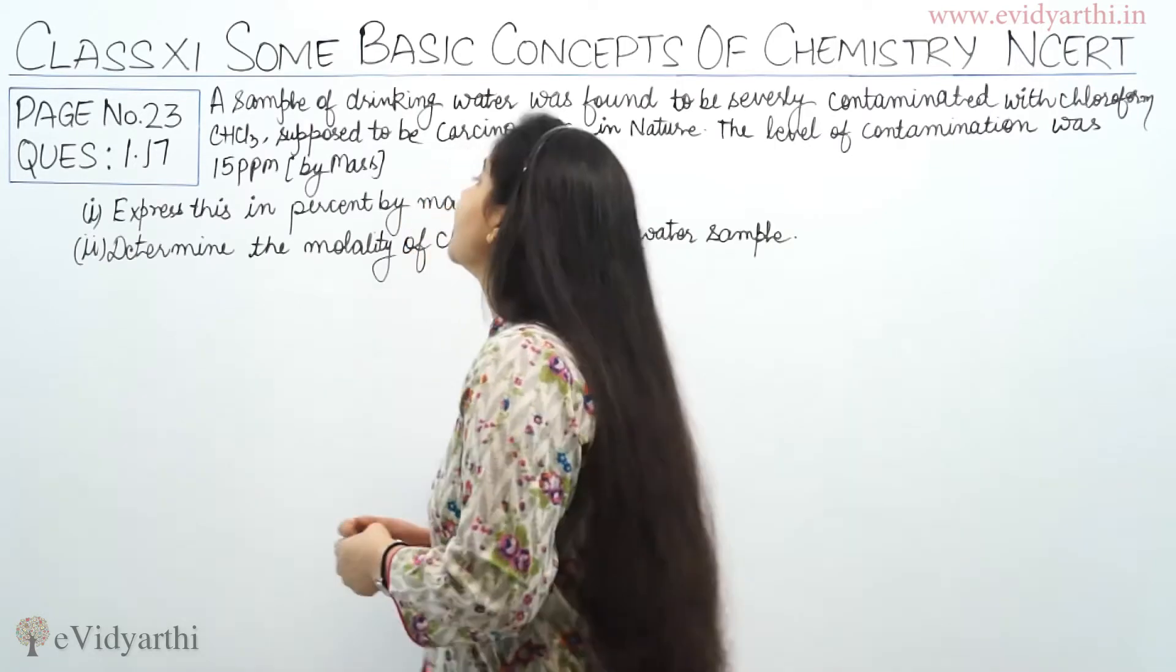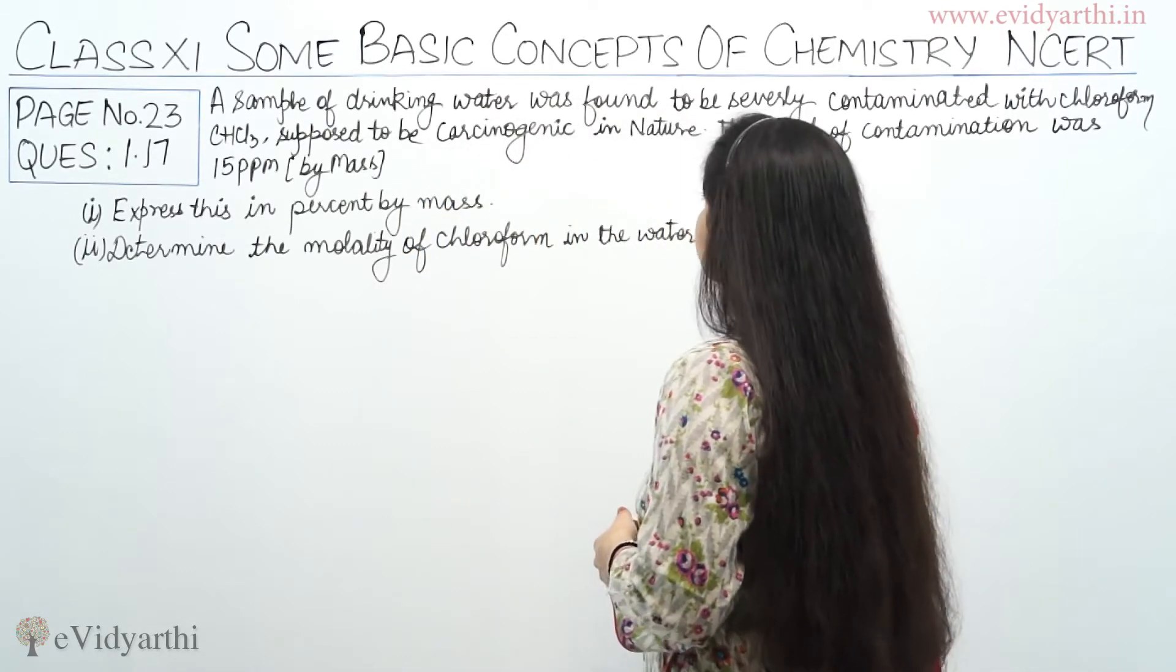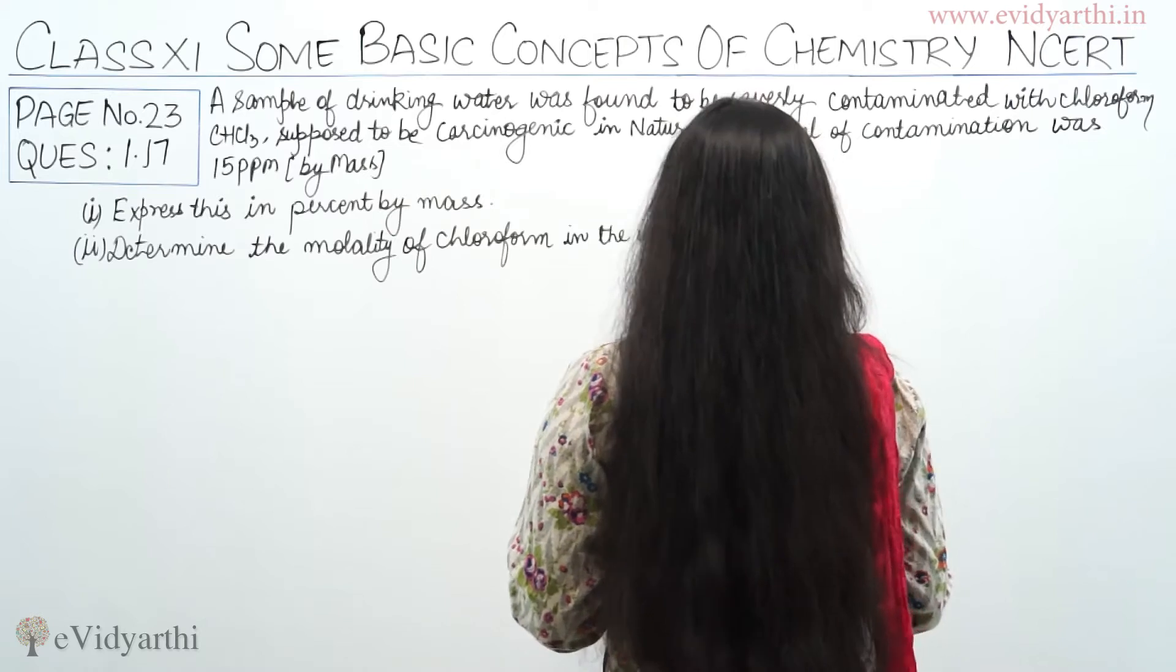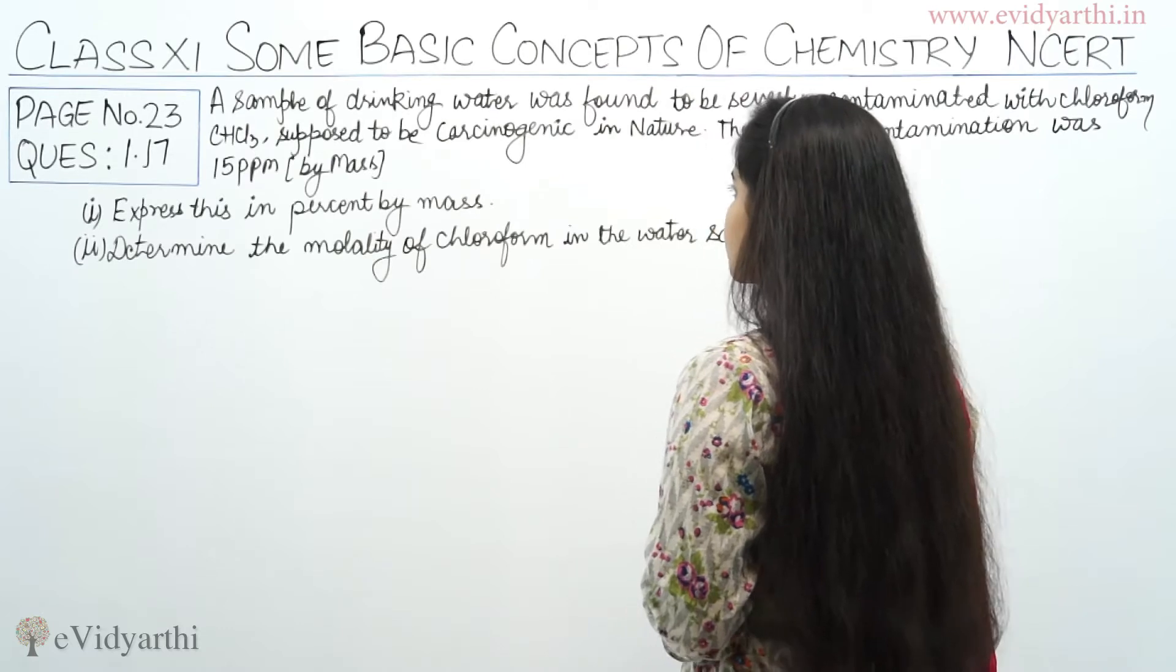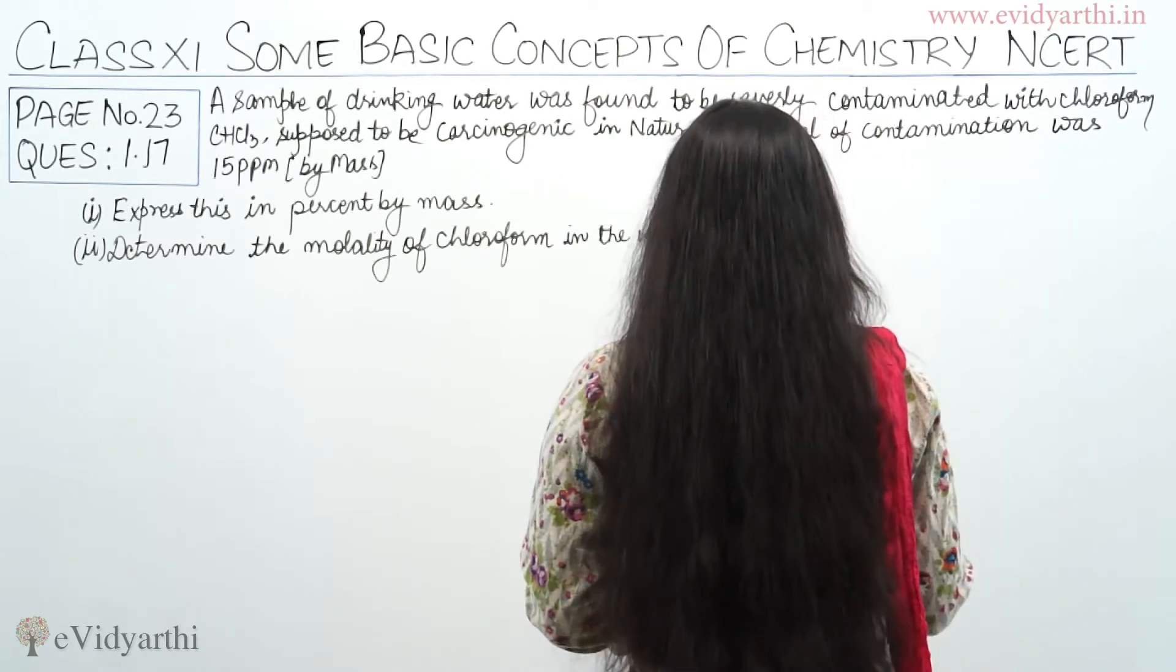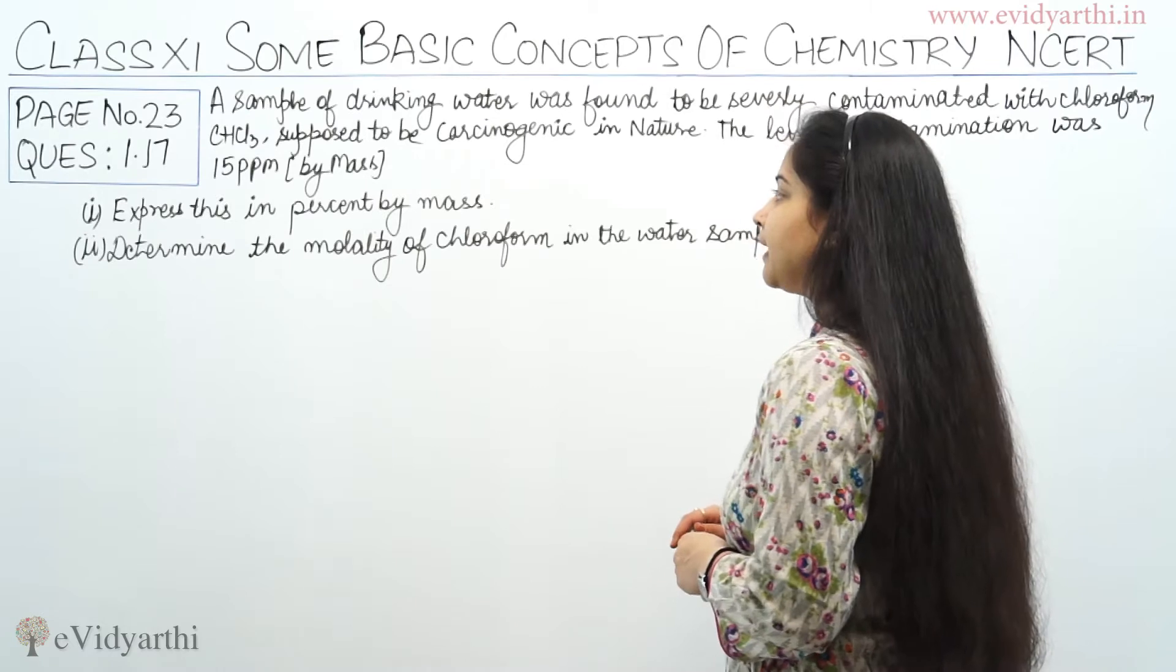So have a look at the question. A sample of drinking water was found to be severely contaminated with chloroform, which is supposed to be carcinogenic in nature. The level of contamination was 15 ppm.